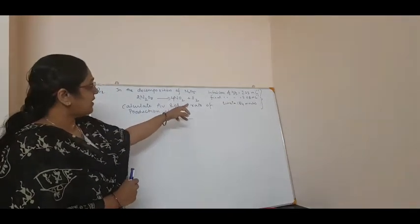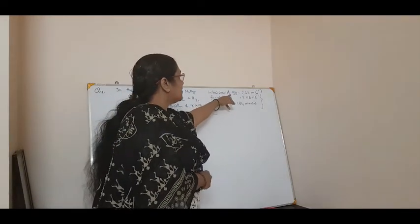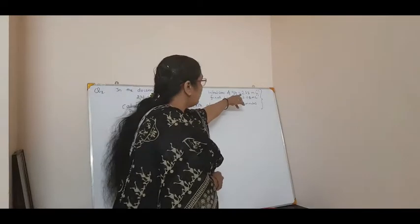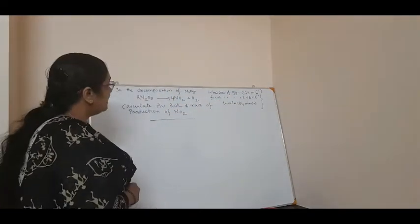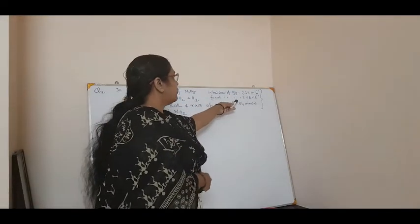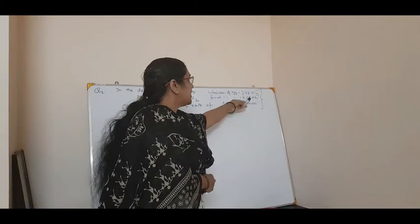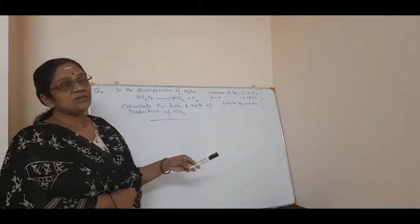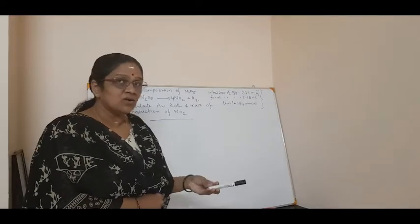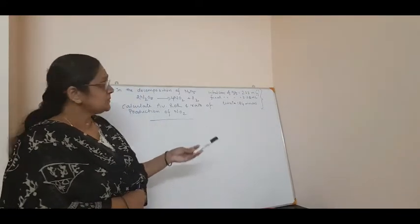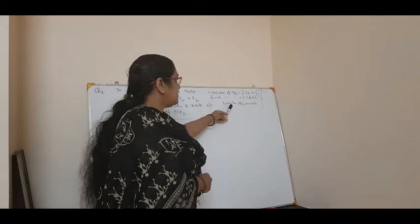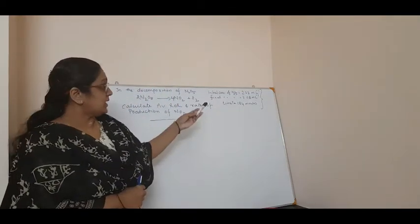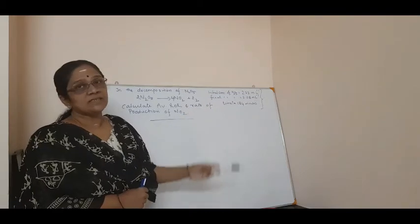For that, it is given: the initial concentration of N₂O₅ as 2.33 mol per liter and final concentration of N₂O₅ is 2.08 mol per liter. So, the initial concentration as well as the final concentration is given. Also, time is given as 184 minutes.